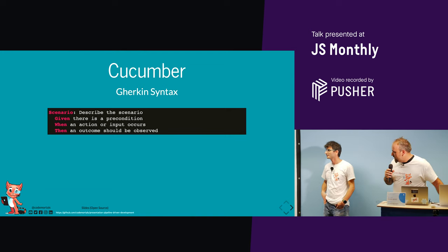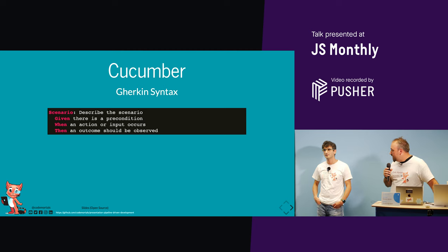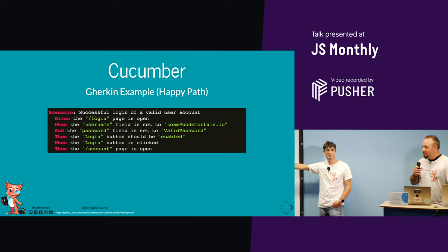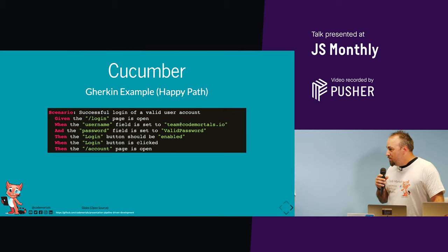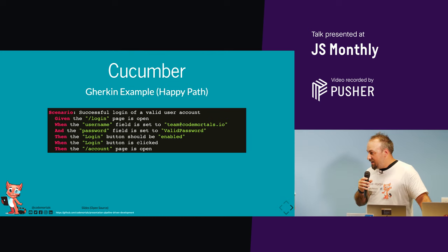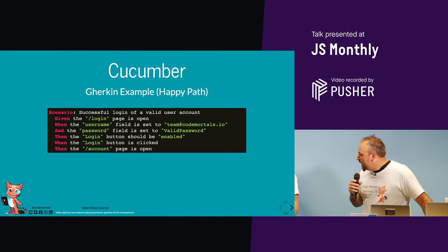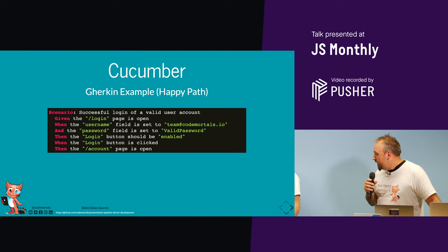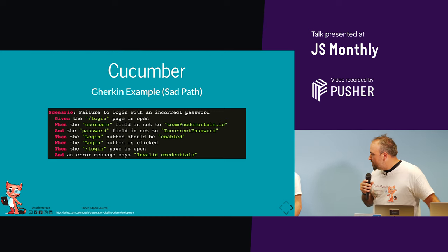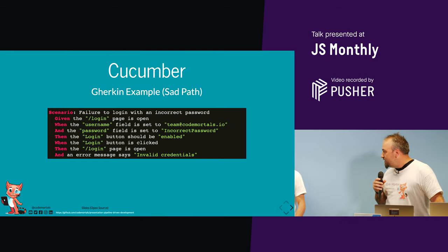Cucumber, on the other hand, gives us Gherkin syntax — given, when, then. Given a precondition, when you perform some action, then something happens. By comparison, we write something that's readable: we go to the login page, find the username field, put a value in, find the password field, the login button becomes enabled, click it, and the page opens. For the sad path, almost all those steps are the same — the difference is we put in a different invalid password, and the expected condition is staying on the login page and seeing a message that credentials were bad. Business stakeholders can read this; they'd walk away from the raw Cypress script.